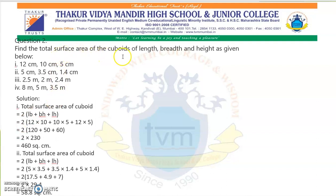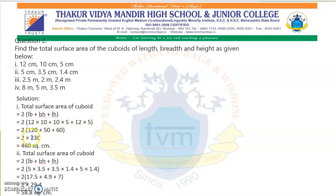Next, find the total surface area of a cuboid given length, breadth, and height. Length = 12, breadth = 10, height = 5. Formula: total surface area = 2(LB + BH + HL). Substituting: 2(12×10 + 10×5 + 12×5) = 2(120 + 50 + 60) = 2 × 230 = 460 cm².